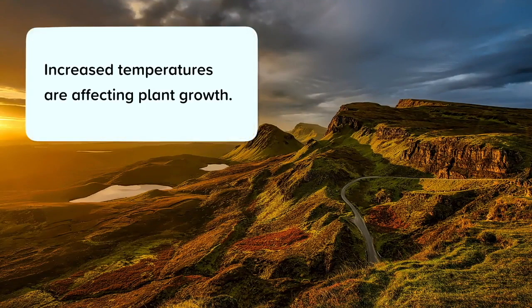Increased temperatures are affecting plant growth. Higher levels of carbon dioxide in the atmosphere should increase photosynthesis, but increasing temperatures and longer growing seasons stress plants. Plants are now slowing growth over the summer due to lack of water, and stressed plants are much more susceptible to disease and insect attack. Plants are the main producers on land, so affecting them affects the whole food chain. Dry landscapes are also much more susceptible to fire, which releases carbon dioxide into the atmosphere, making the problem worse.